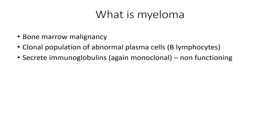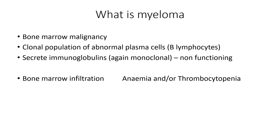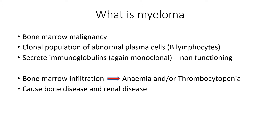These plasma cells secrete immunoglobulins which are monoclonal and therefore non-functioning. It's a combination of too many of these plasma cells in the marrow and too many of these immunoglobulins in the circulation that cause the problems. The plasma cells themselves can infiltrate the bone marrow, leading to anemia and low platelets. The circulating immunoglobulins can cause bone disease and renal disease.